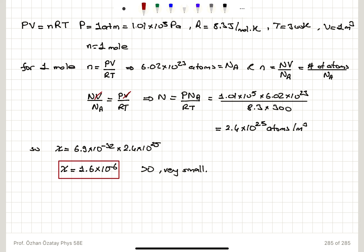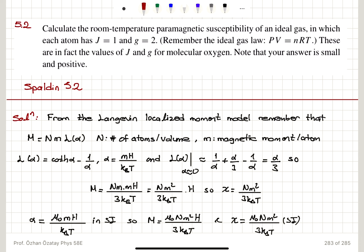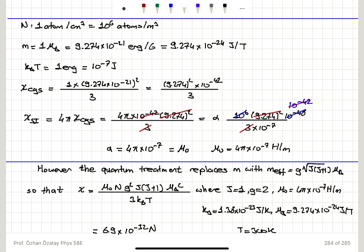These numbers match those of molecular oxygen. To summarize: we calculated the room temperature paramagnetic susceptibility of an ideal gas with J = 1 and G = 2, the values for molecular oxygen, using the ideal gas law to find number of atoms per volume. The Langevin localized moment model gives magnetization as N·M·L(α), where L(α) ≈ α/3 for small α, with α = mH/k_B T. Multiplying by μ₀ converts the CGS result to SI correctly.